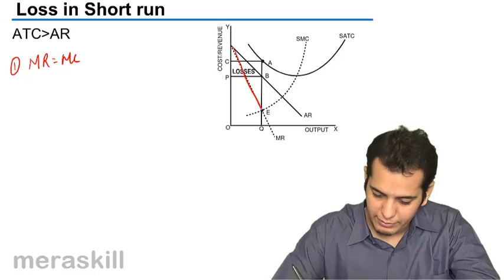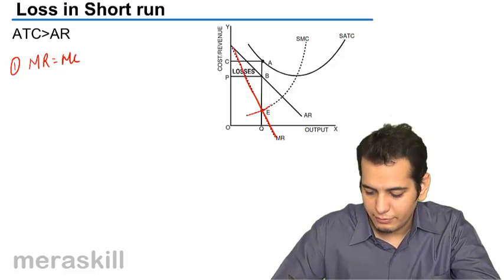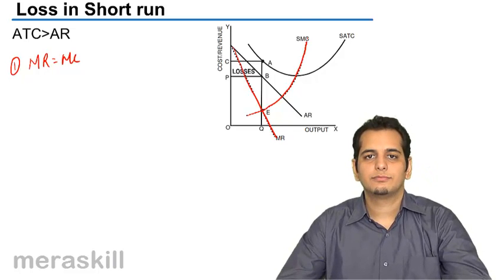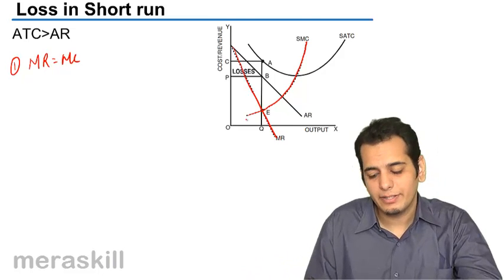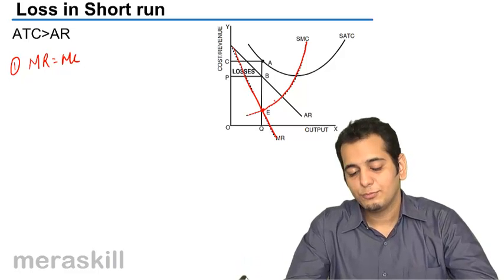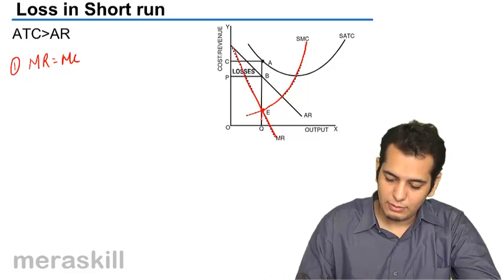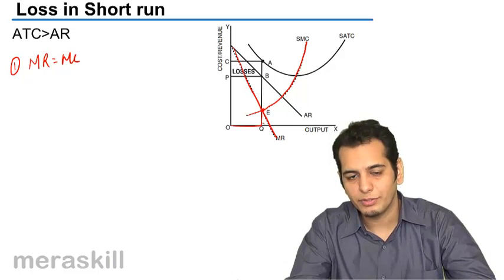This is the MR curve and this is the MC curve. Now, where is MR cutting MC? At this point, which is named E because it becomes the equilibrium point. Thus OQ becomes the equilibrium quantity.